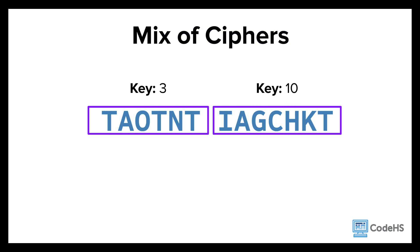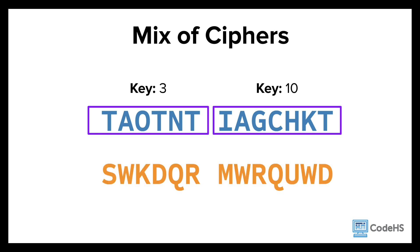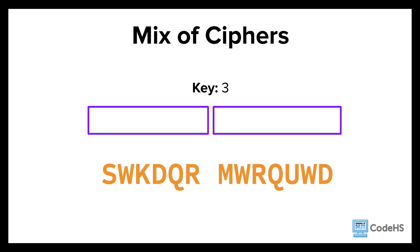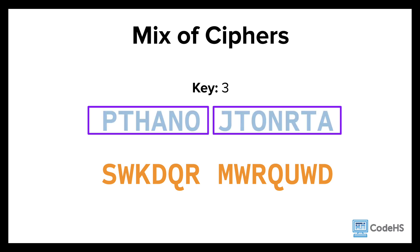Now let's apply the two separate keys to these two separate blocks. Looks good. If someone tries to decipher this message using the key 3, that's still unreadable.